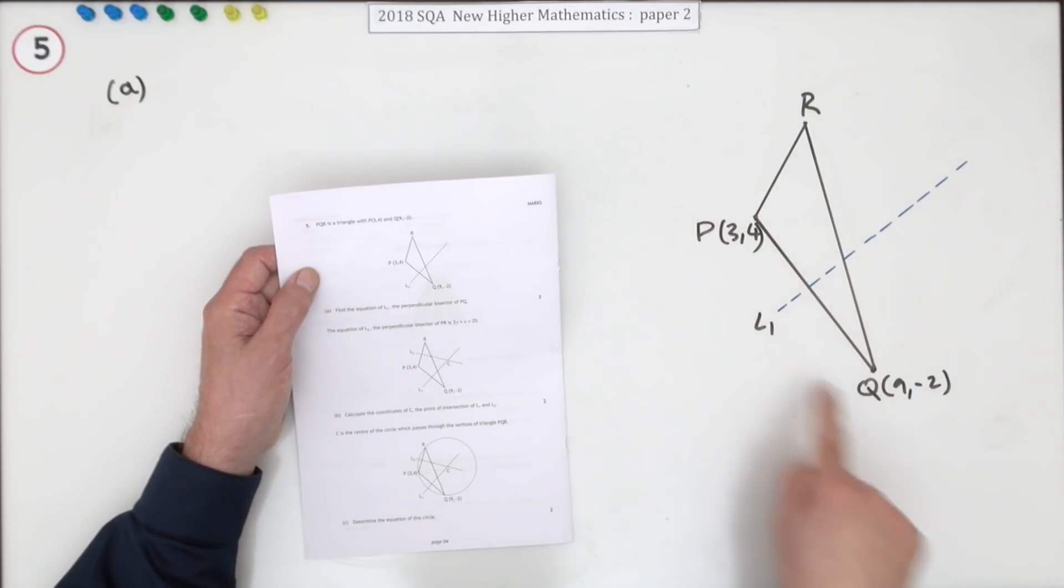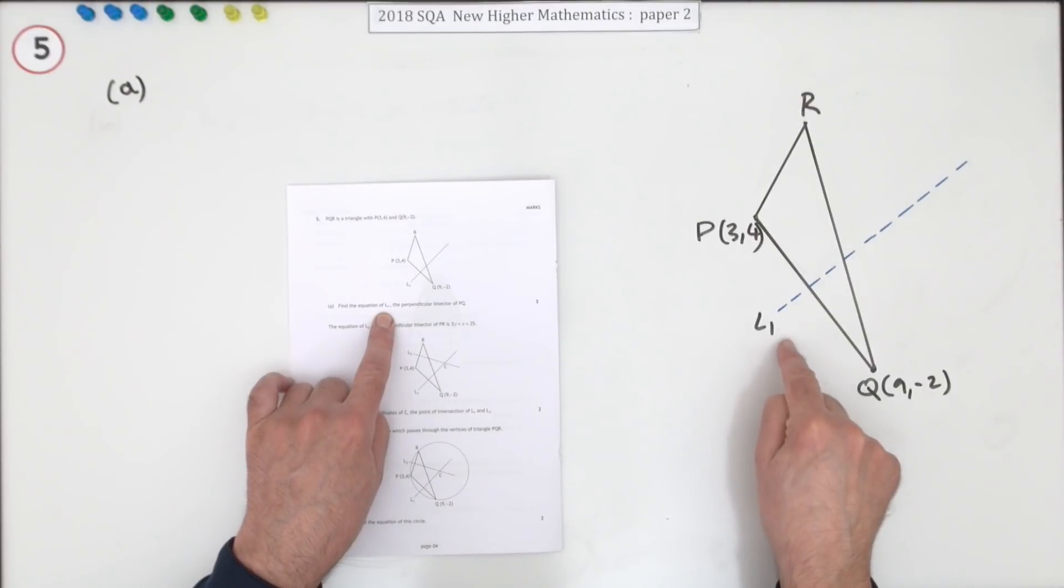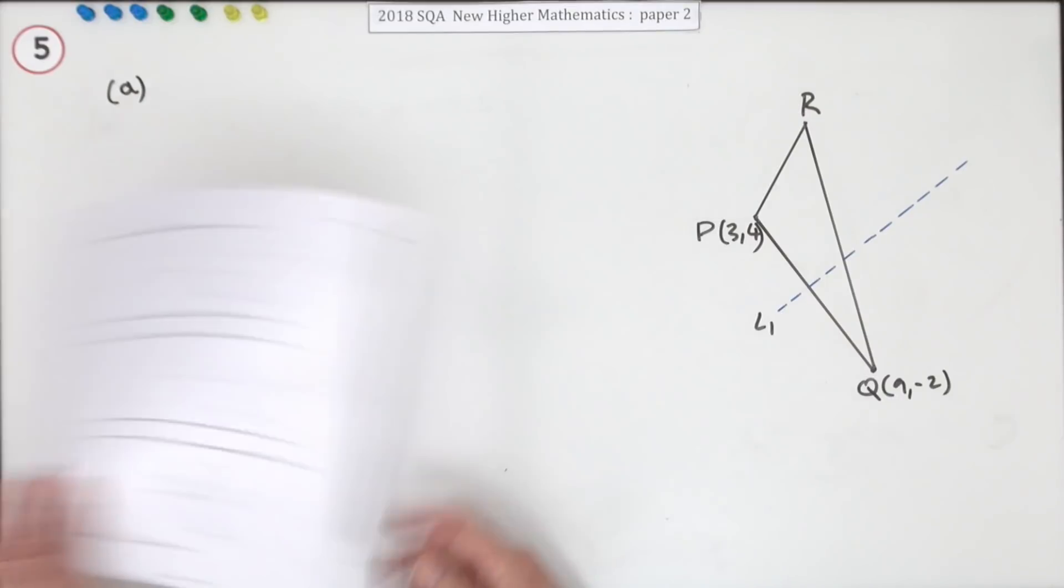You're given this triangle PQR with these two vertices known, and you have to find the equation of this line they're calling L1, which is the perpendicular bisector of PQ, for three marks.